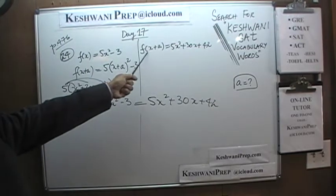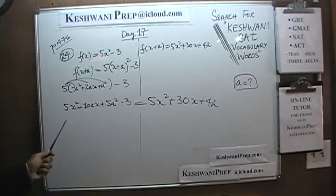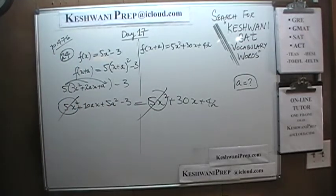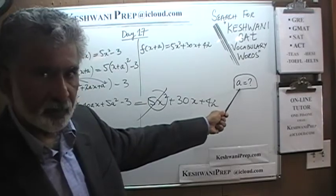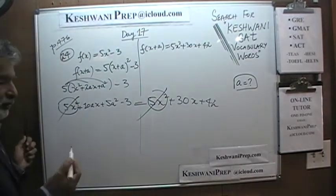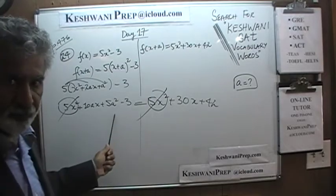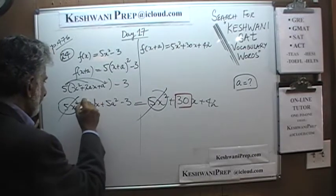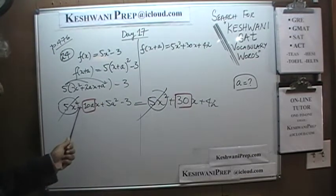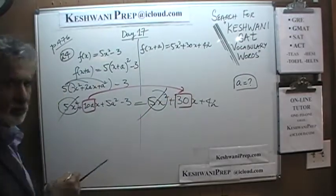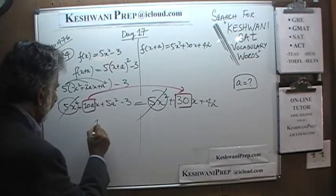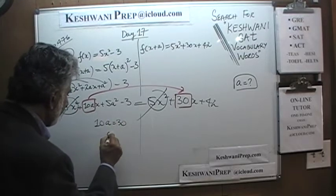The first thing we notice is that we have 5x squared on both sides, so those cancel. We are interested in finding a. Because these two quantities are equal, the coefficient of x on each side must equal each other. The coefficient of x on our expanded side is 10a, and on the given side it is 30. So 10a must equal 30, which means a must equal 3.